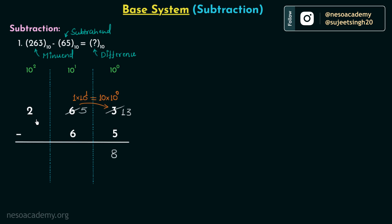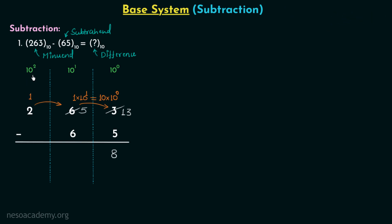This time 5, which is at the tens place, will take the borrow from 2, which is at the hundreds place. So 2 will give the borrow — it will give 1 again. This 1 has the place value 10 raised to power 2, so we have 1 multiplied by 10 squared, and when this 1 is written at the tens place it becomes 10 multiplied by 10 to power 1. So 5 is getting 10 after borrowing, just like 3 was getting 10.